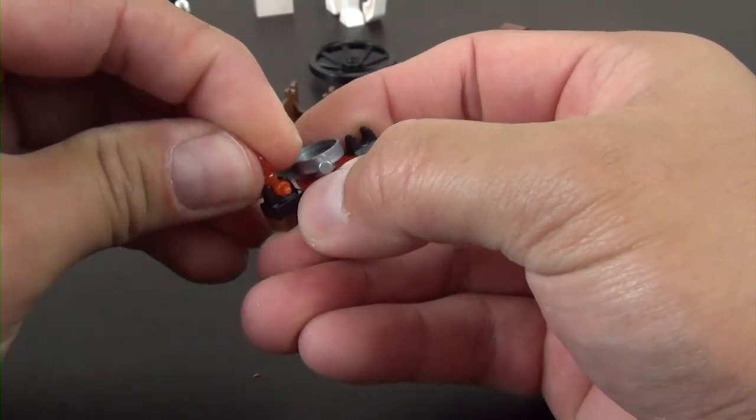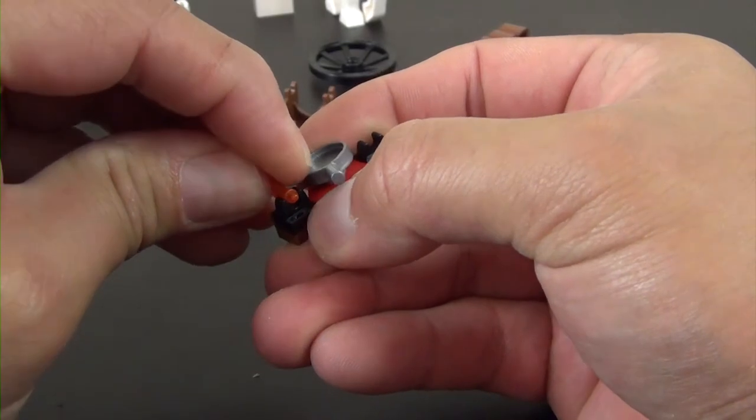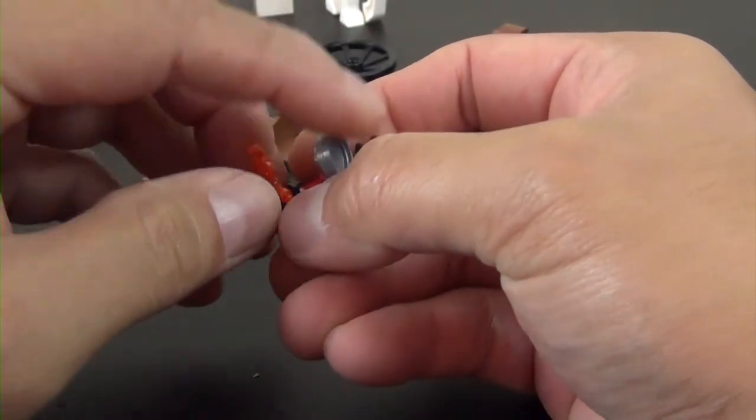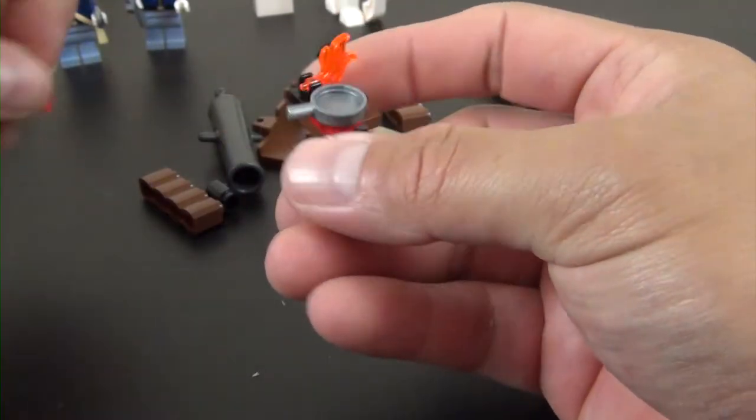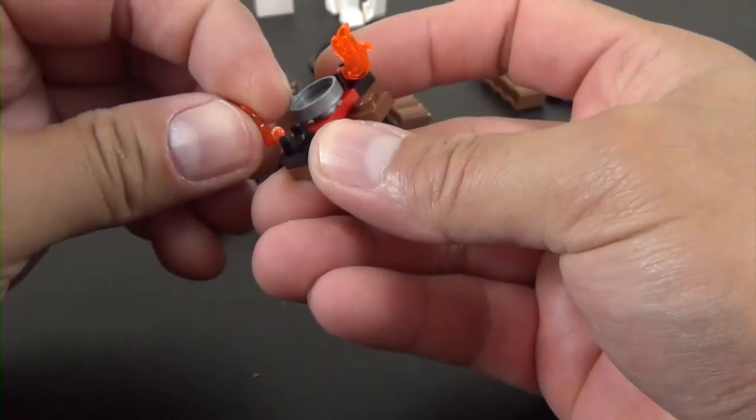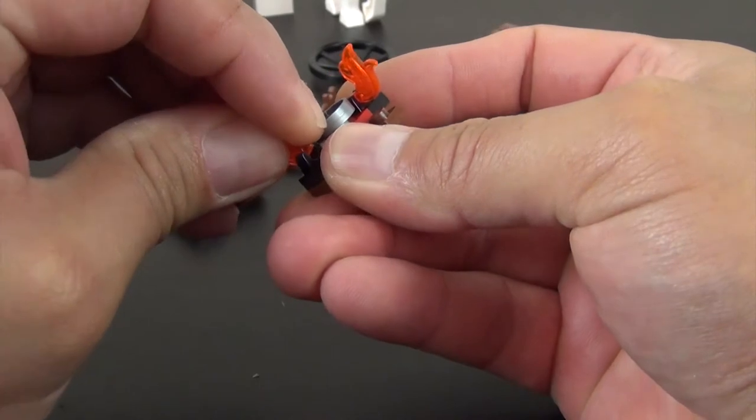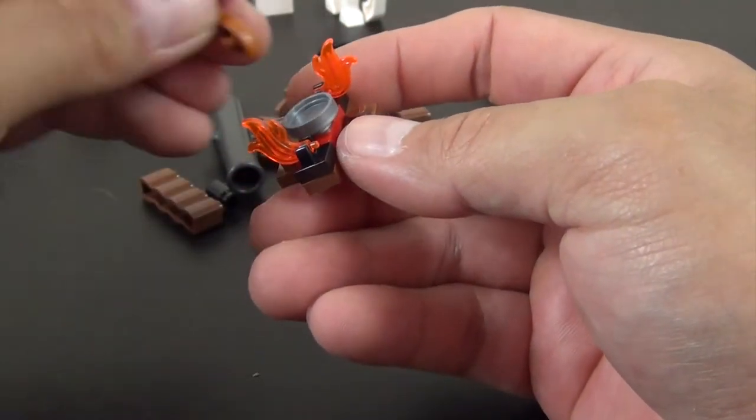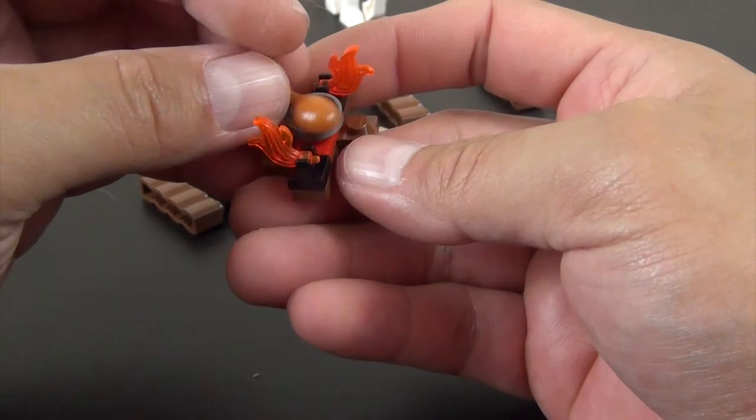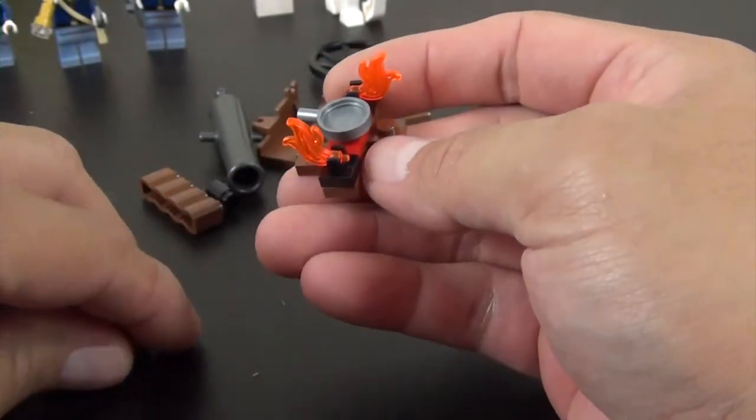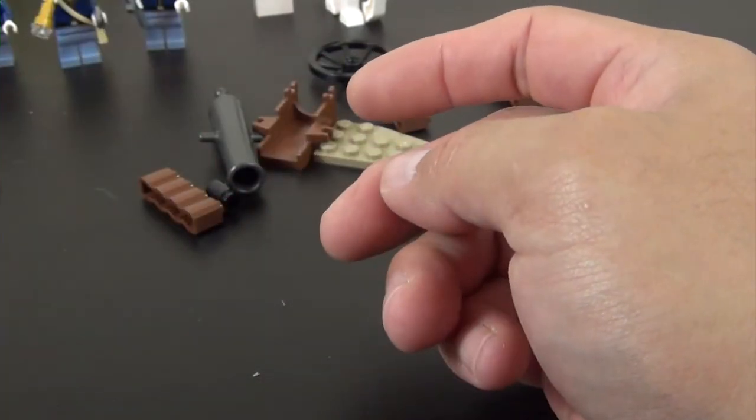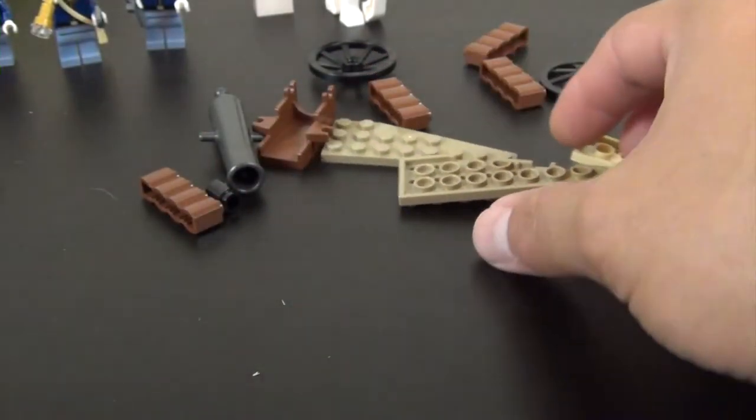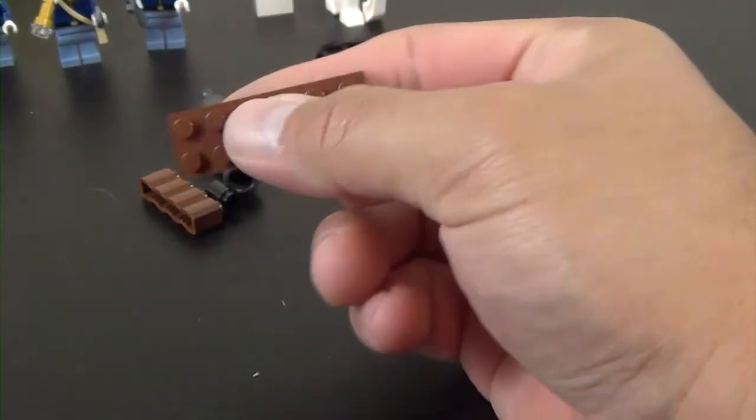So we have a little campfire with a little skillet on there, and we'll put a piece of chicken in the skillet. Chicken's actually bigger than the skillet. So that's our first little accessory piece.